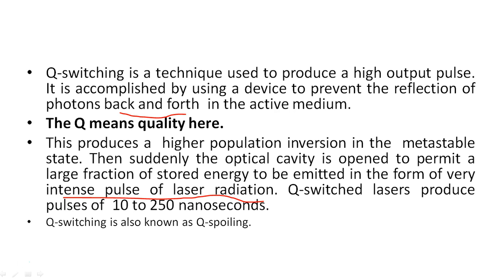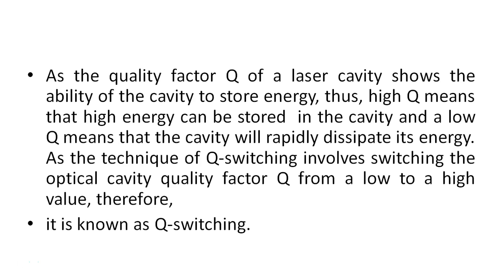Q-switched lasers produce pulses of 10 to 250 nanoseconds. Q-switching is also known as Q-spoiling. The quality factor Q of a laser cavity shows the ability of the cavity to store energy. High Q means that high energy can be stored in the cavity, and a low Q means that the cavity will rapidly dissipate its energy. That's why Q means quality. The technique of Q-switching involves switching the optical cavity quality factor Q from a low to high value, and therefore it is known as Q-switching.